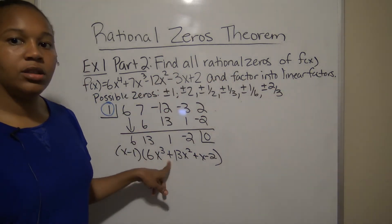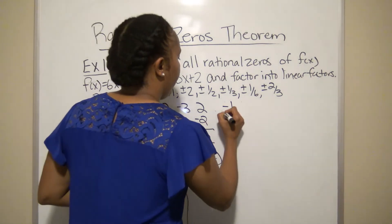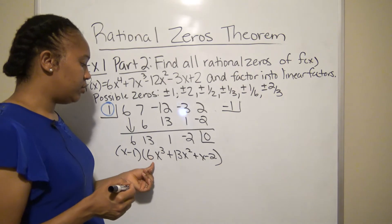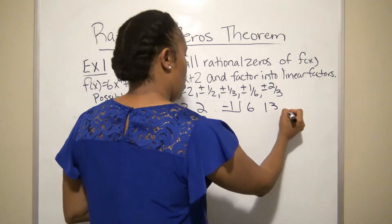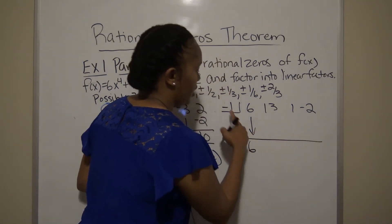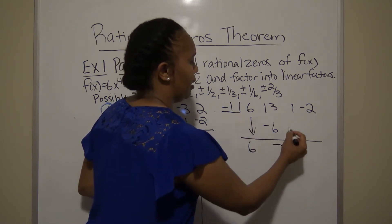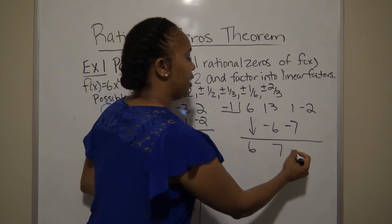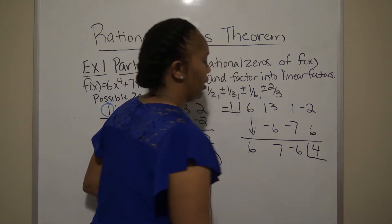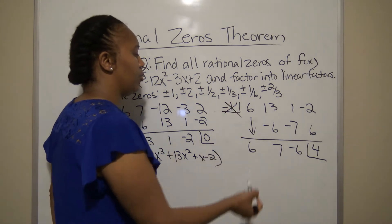Now I'll test k = -1, but only on the quotient coefficients: 6, 13, 1, -2. Dropping 6 down: (-1)×6=-6, 13-6=7, (-1)×7=-7, 1+(-7)=-6, (-1)×(-6)=6, -2+6=4. The remainder is 4, not zero, so -1 is not a zero.